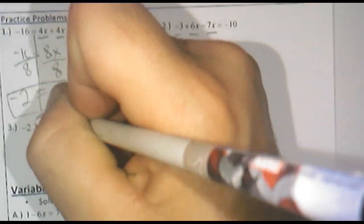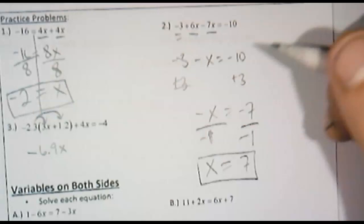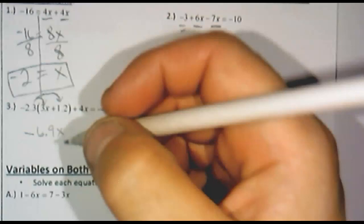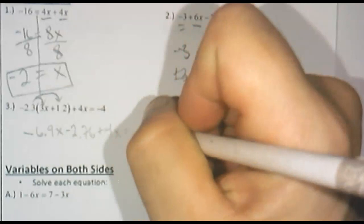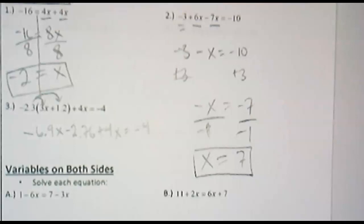And then here we have one more. We're going to distribute first. That makes sense here. Negative 2.3 times 3. What's that going to be? Negative 6.9x. And then negative 2.3 times 1.2. So I have my calculator handy here. This is going to be a minus 2.76 when I multiply. Plus 4x. Bring that along for the ride. Equals negative 4. Bring that along.